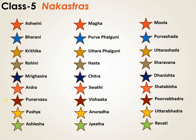Let's repeat from the beginning. Ashwini, Bharani, Kritika, Rohini, Mrigashira, Ardha, Punarvasu, Pushya, Aslesha, Magha, Poorvaphalguni, Uttaraphalguni, Hasta, Chitta, Swati, Vishaka, Anuradha, Jyeshtha, Moola, Poorvashada, Uttarashada, Shravana, Dhanishtha, Shatabisha, Poorvabhadra, Uttarabhadra, Revati.